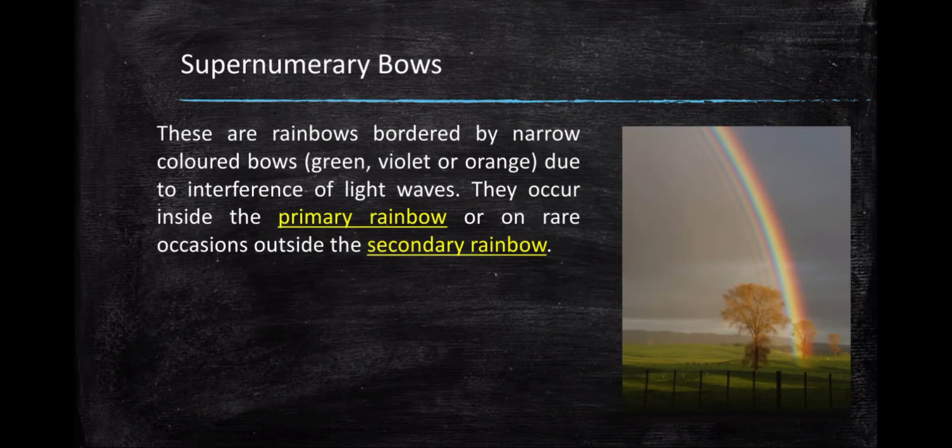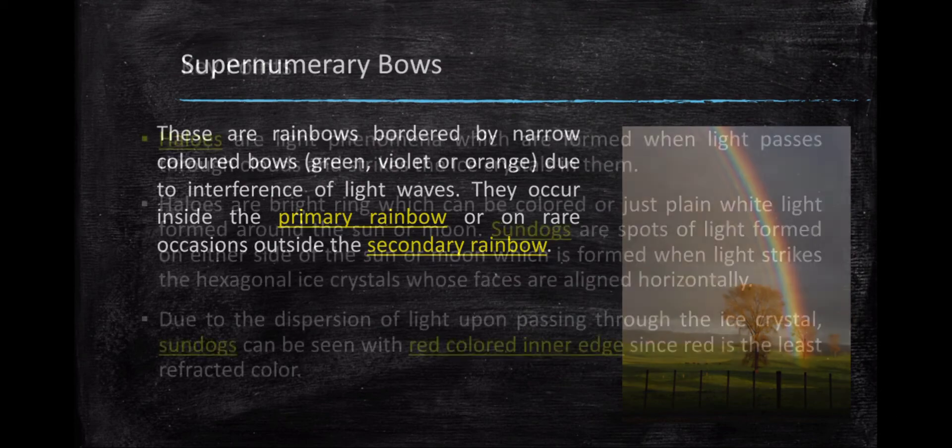And now, let's talk about supernumerary bows. These are rainbows bordered by narrow-colored bows, green, violet, or orange, due to interference of light waves. They occur inside the primary bow or on rare occasions outside the secondary rainbow. I have here the picture, an example image of supernumerary bows. You can see these small red rainbows inside the primary bow, those are the supernumerary bows. They're small and not very clear.